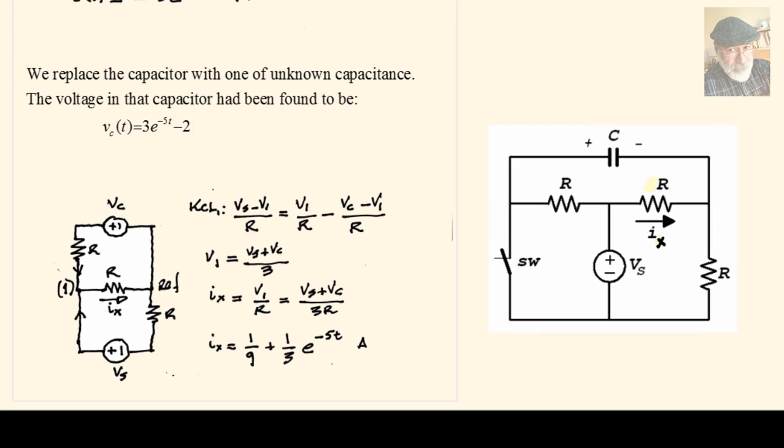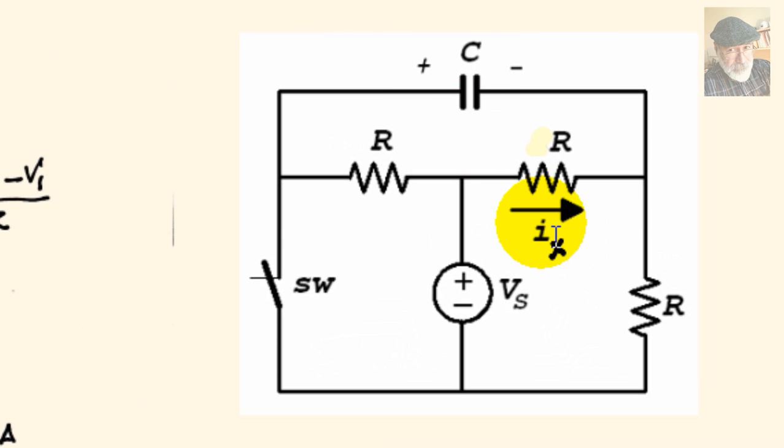For the last part, we have replaced the capacitor with another one of unknown capacitance. The voltage in that capacitor has been found using the same procedure we used before. And it is, of course, a different value. It is 3e to the negative 5t minus 2 volts. The question is, if that voltage in the capacitor is found to be this one, what is going to be the current Ix in this resistor on the top right of the circuit?